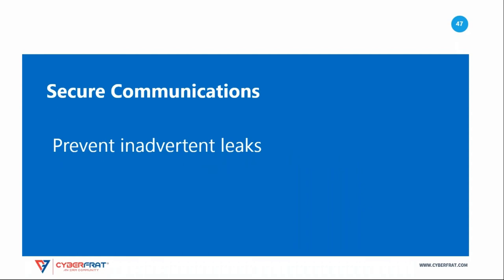Your communication plan should not only describe who you will communicate with during an incident, but should also describe how you will communicate. Make sure that you have secure communication channels in place before an incident occurs. This provides a security mechanism to share information with trusted employees and third parties. Using secure channels prevents the inadvertent release of information to the public or to the attackers.